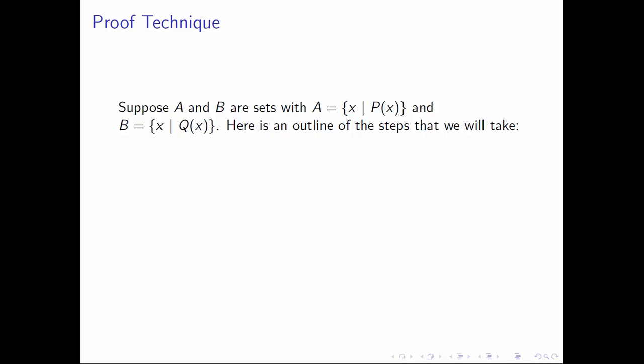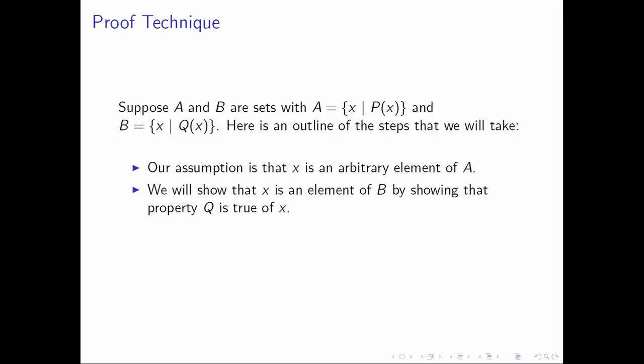Here's an outline of the steps that we're going to take. We always need to have an assumption, and when we're doing a subset proof, our assumption will be that X is an arbitrary element of the set A. What we'll want to show, then, is that X is also an element of B, and the way that we're going to go about showing this is we're going to show that property Q is true of this element X, because B is the set of all things that satisfy property Q. X would belong to B by this notation.